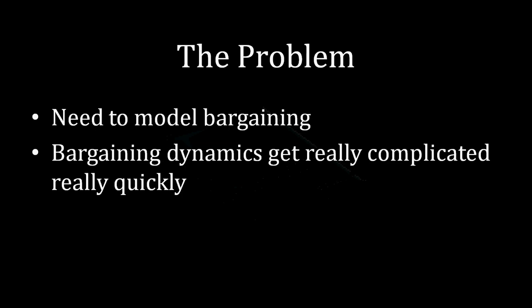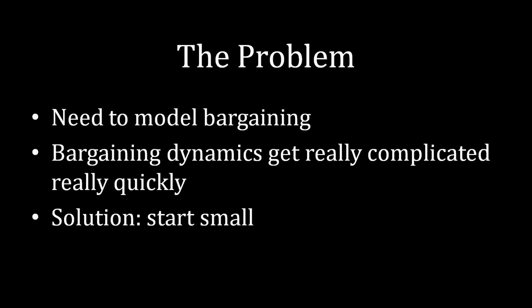The problem we're trying to solve here is that if we've bought into modeling bargaining as a great way to learn about bargaining power, we first need to write that model down. Unfortunately, any interesting strategically interdependent situation is going to grow really complicated really quickly, and bargaining is no exception. So if we start with the most complicated model possible, we're really just going to be shooting ourselves in the foot. The solution is to start small with the ultimatum game.